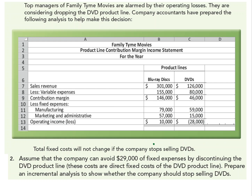Now let's look at the second part of the problem. Assume the company can avoid $29,000 of fixed expenses by discontinuing the DVD product line. So essentially, we get rid of all the revenue, all the variable expenses, and $29,000 of the fixed costs. If we're getting rid of $29,000, let's say our fixed manufacturing costs drop down to $30,000.